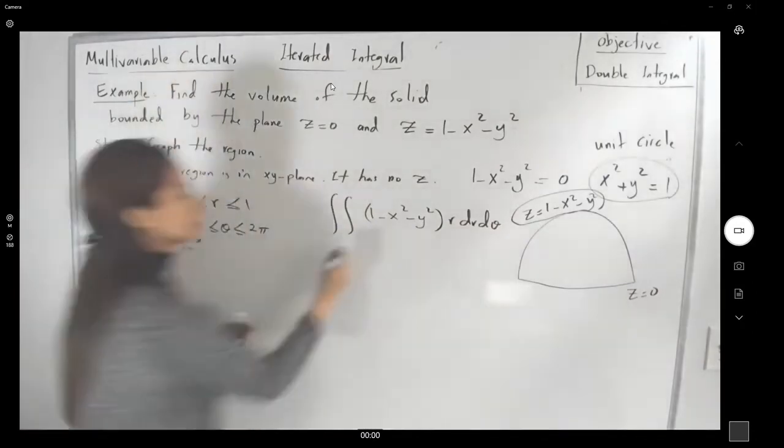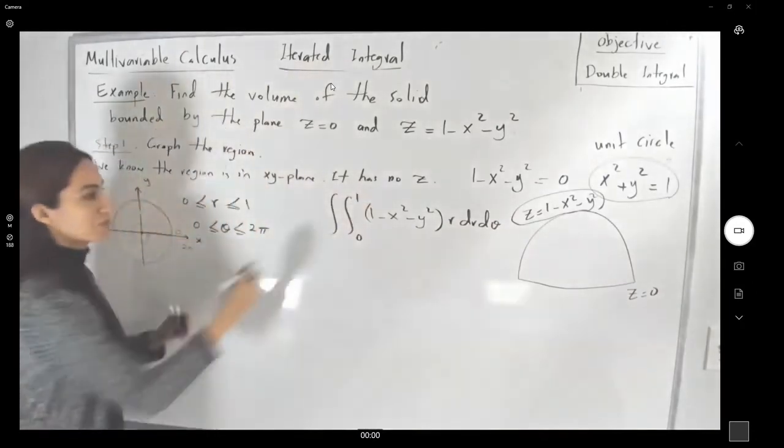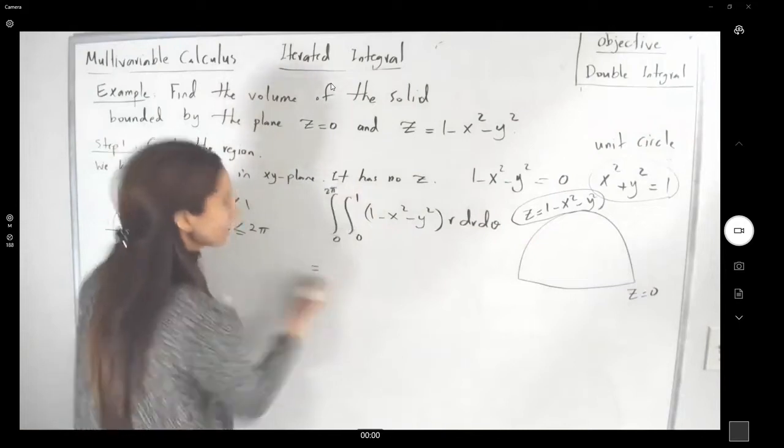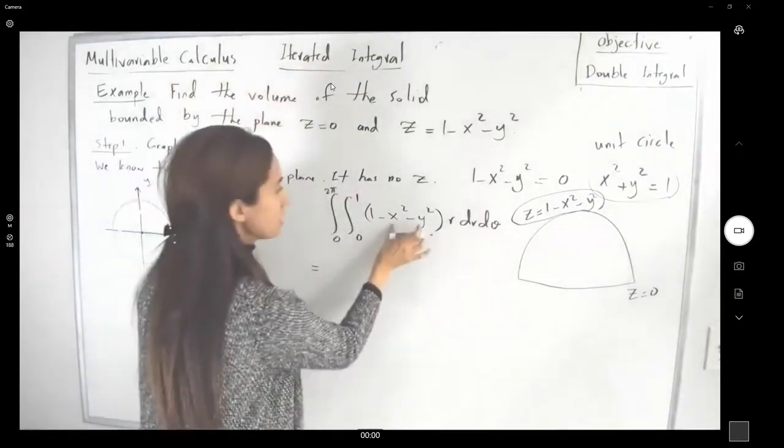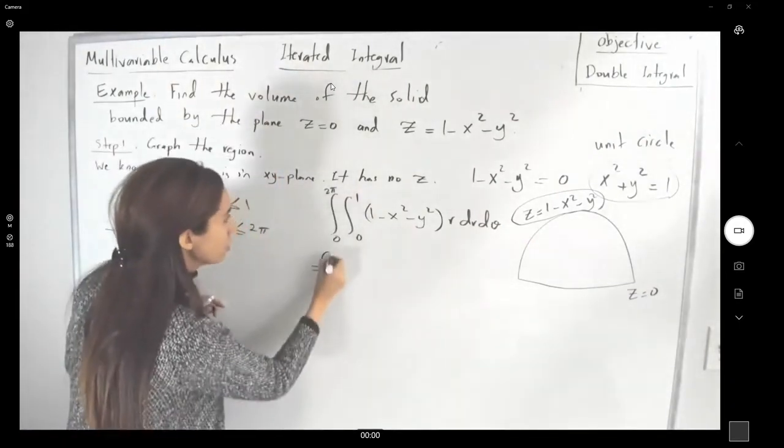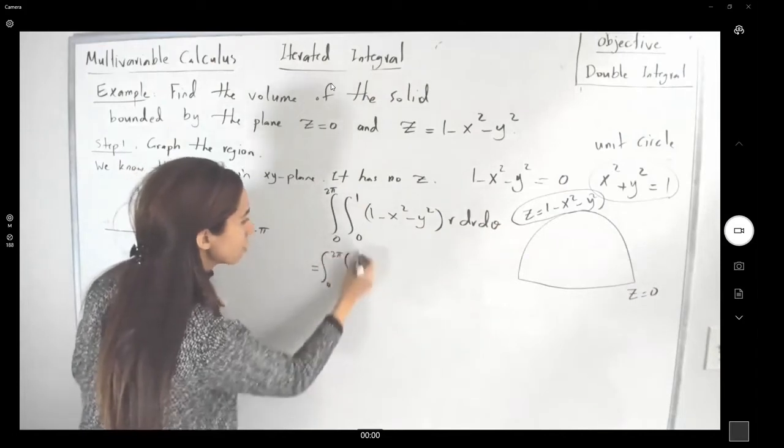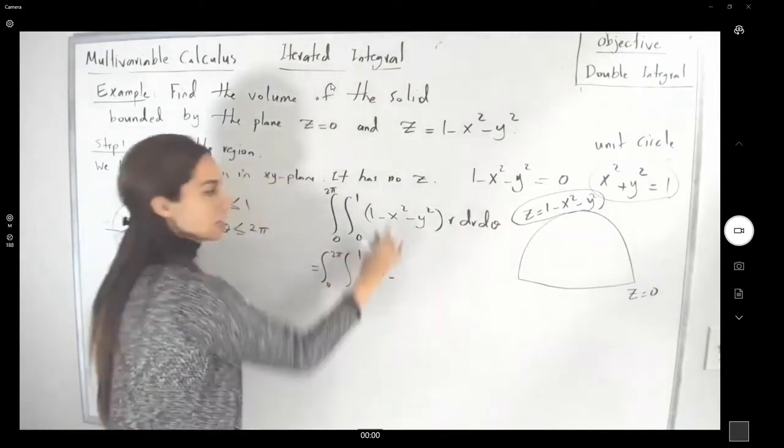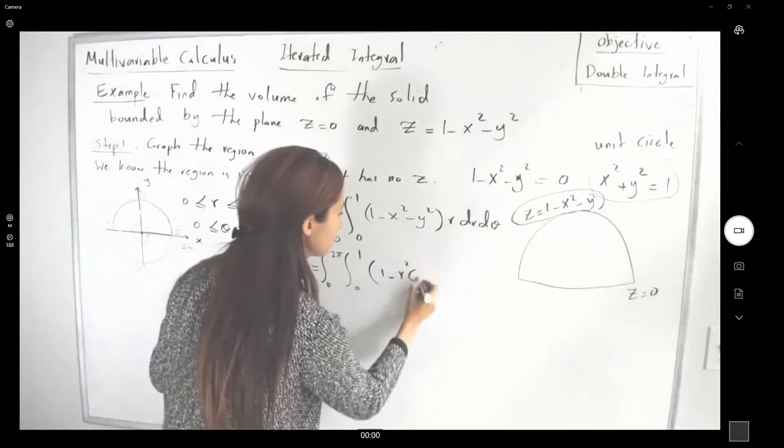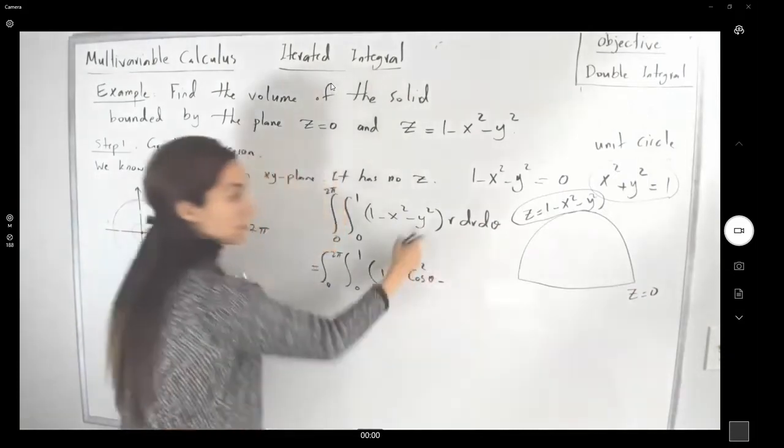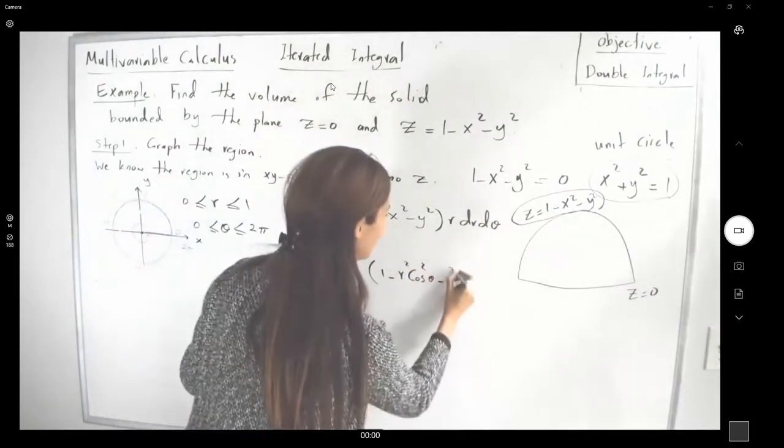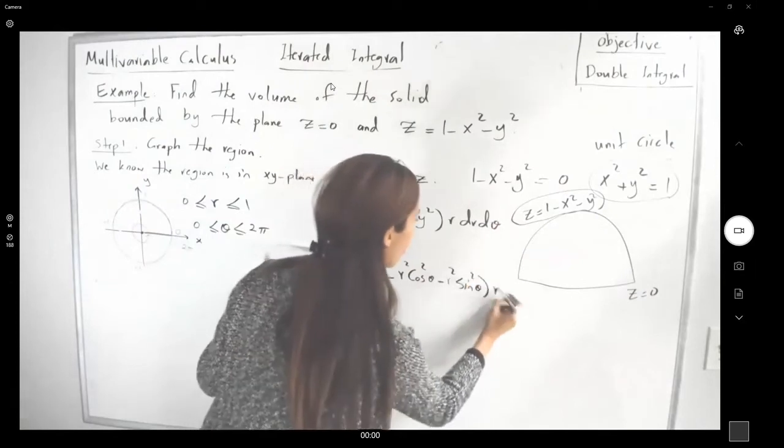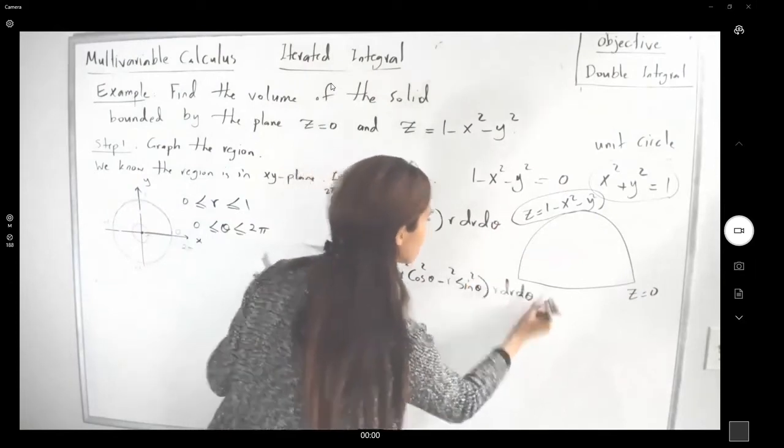r is bounded between 0 and 1, theta is bounded between 0 to 2π, and here we have, okay, this is equal to 0 to 2π, 0 to 1, 1 minus r squared cosine squared theta minus r squared sine squared theta, r dr d theta.